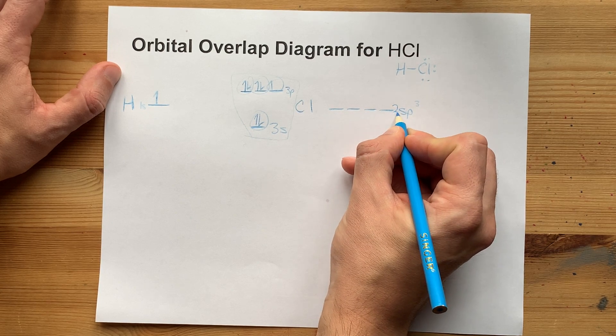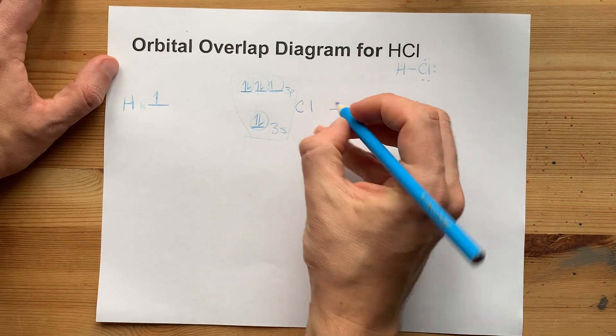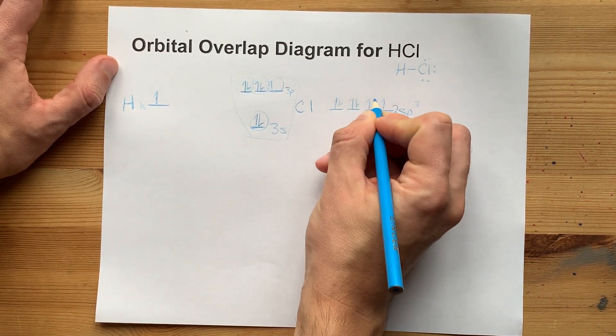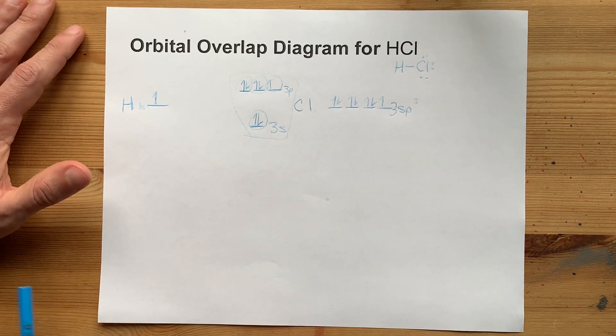Some teachers want you to label it with the 3 because it is the third energy level. 1, 2, 3, 4, 5, 6, 7 electrons in those hybridized orbitals.